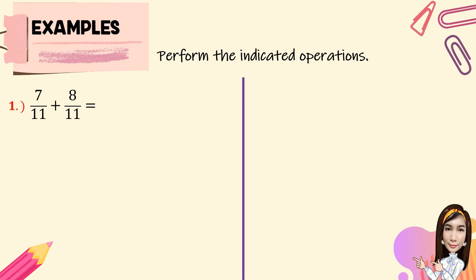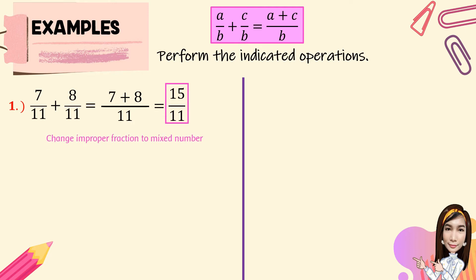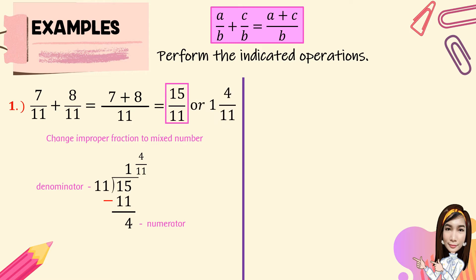Perform the indicated operations. For adding similar fractions, let's have the first one: 7 over 11 plus 8 over 11. We're going to add the numerators and copy the same or common denominator. So 7 plus 8 is equal to 15 over 11. Since 15 over 11 is an improper fraction, we change it to a mixed number. 15 divided by 11 equals 1 and 4 over 11, or 1 and 4 elevenths.